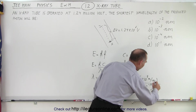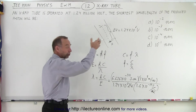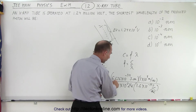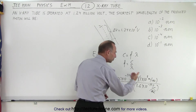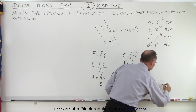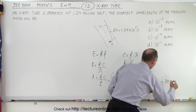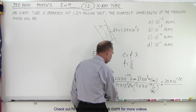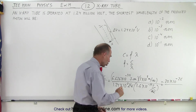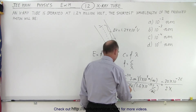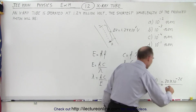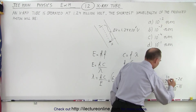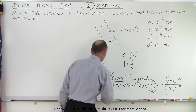The electron volts cancel out and are replaced by joules. That should be one of the four answers. To do this quickly without a calculator: in the numerator, 3 times 6.6 is about 20, so we get approximately 20 times 10 to the minus 26. In the denominator, 1.24 times 1.6 is approximately 2 times 10 to the 6th times 10 to the minus 19, which is 10 to the minus 13.